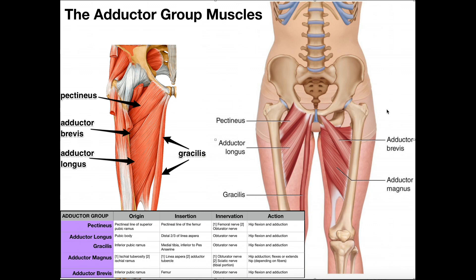Let's go over some of the origins and insertions. We'll begin with the pectineus. The origin of the pectineus is on the pectineal line of the superior pubic ramus — this would be the patient's right pubis, and the superior part of that pubic ramus is the origin. It extends down and has about the highest insertion on the femur, and this region of the femur where it inserts is called the pectineal line of the femur — named after the pectineus muscle that inserts there.